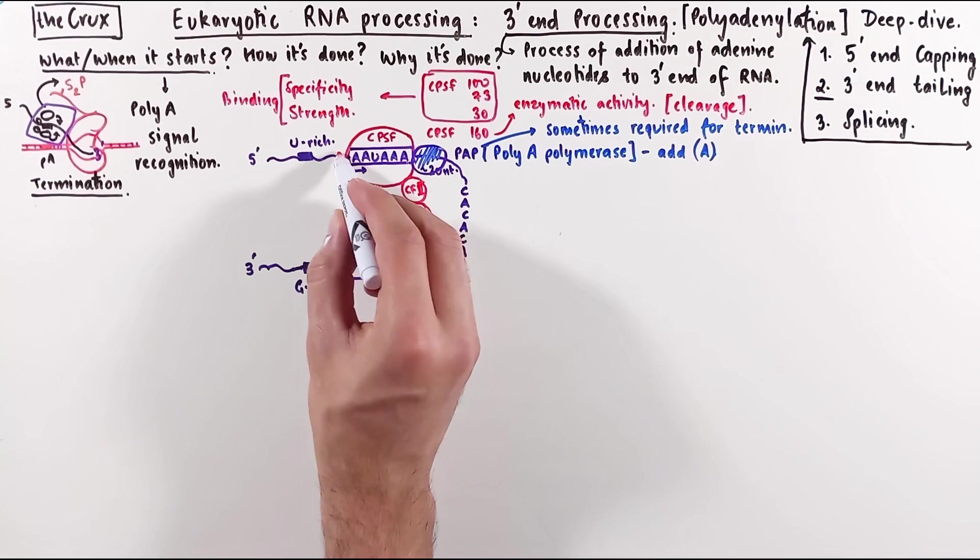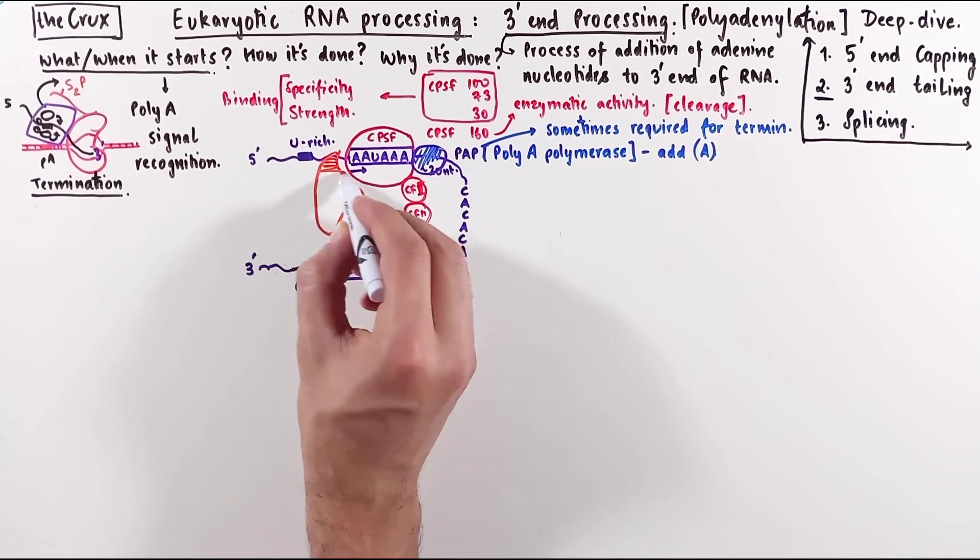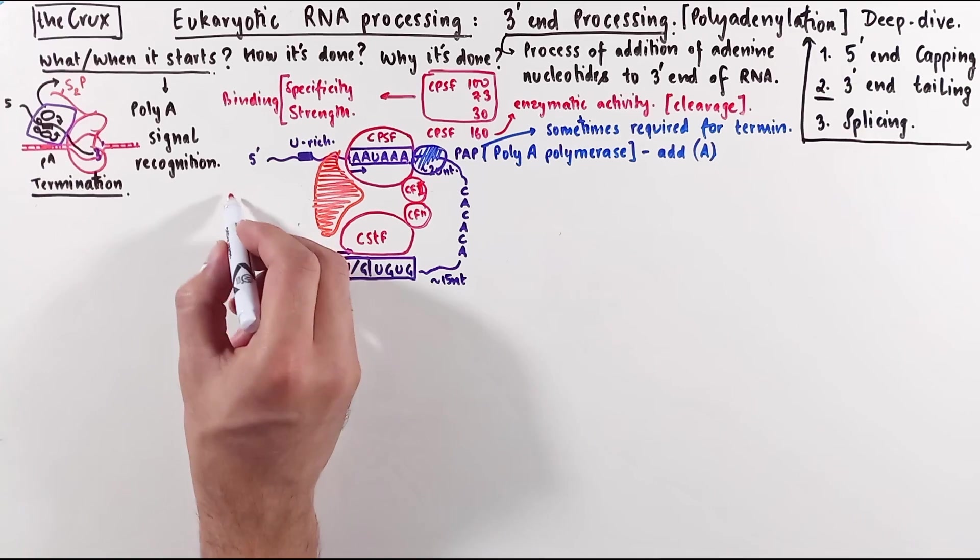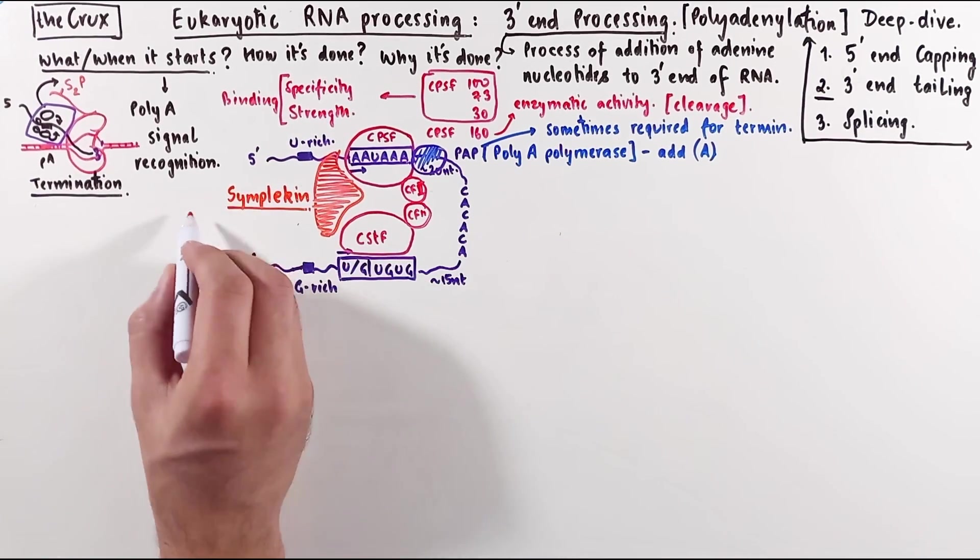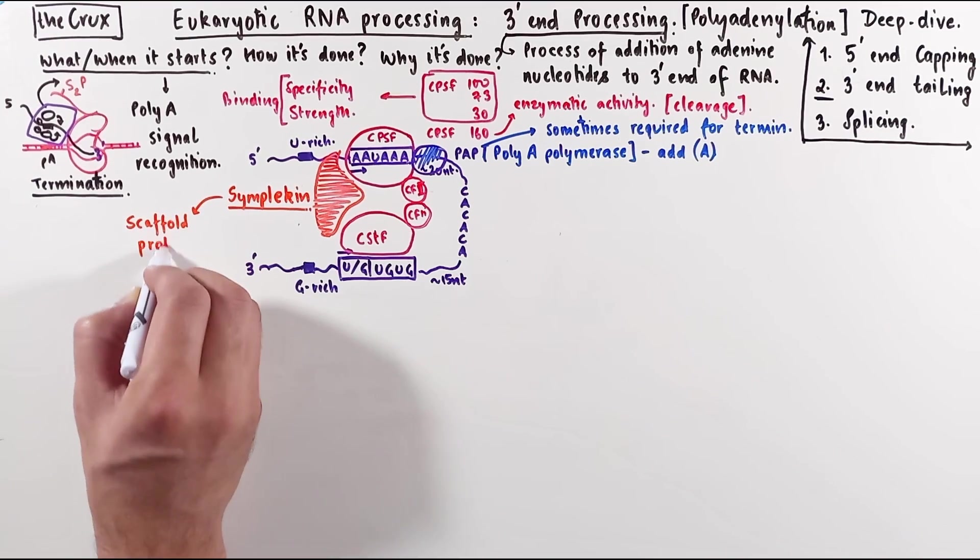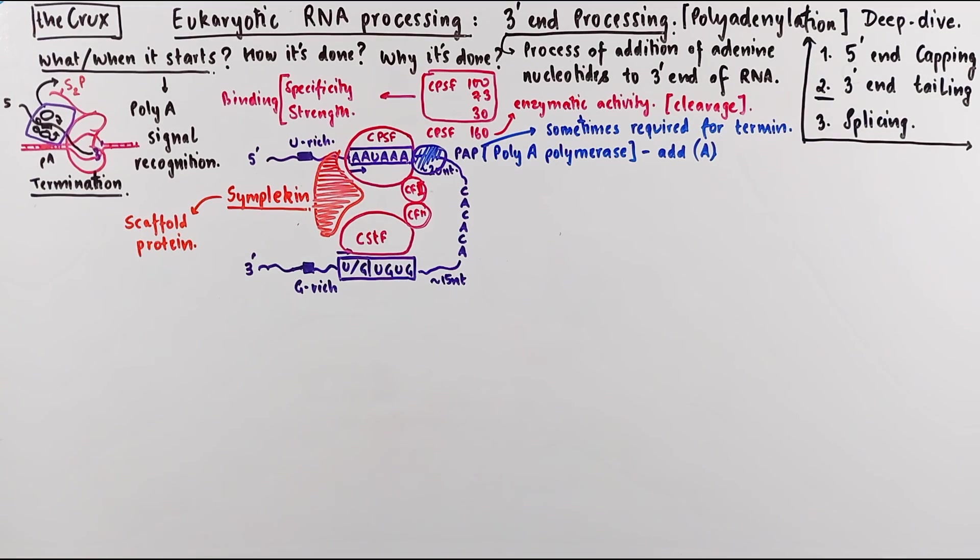All these proteins, CPSF, CSTF, and cleavage factors are held together via the help of a protein called Symplekin, which is a scaffold protein. It basically acts like a glue and makes these complex protein interactions a bit more stable.